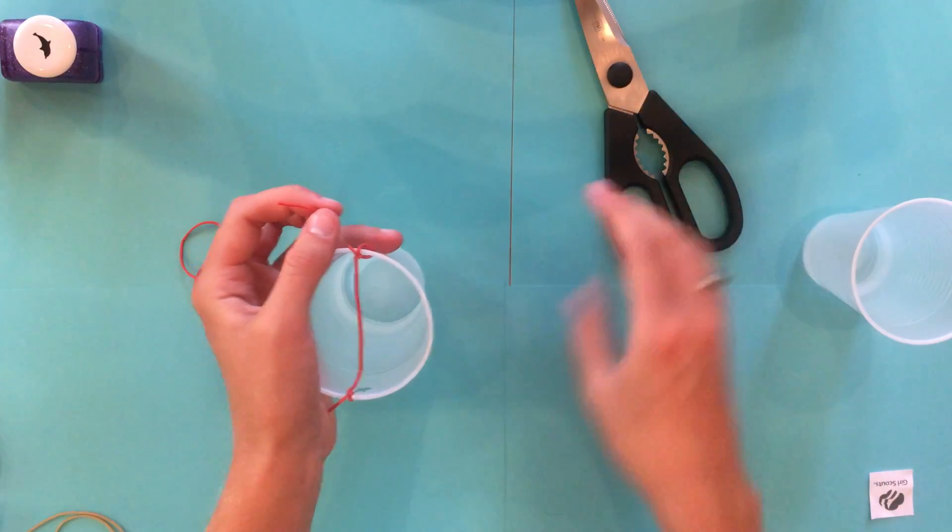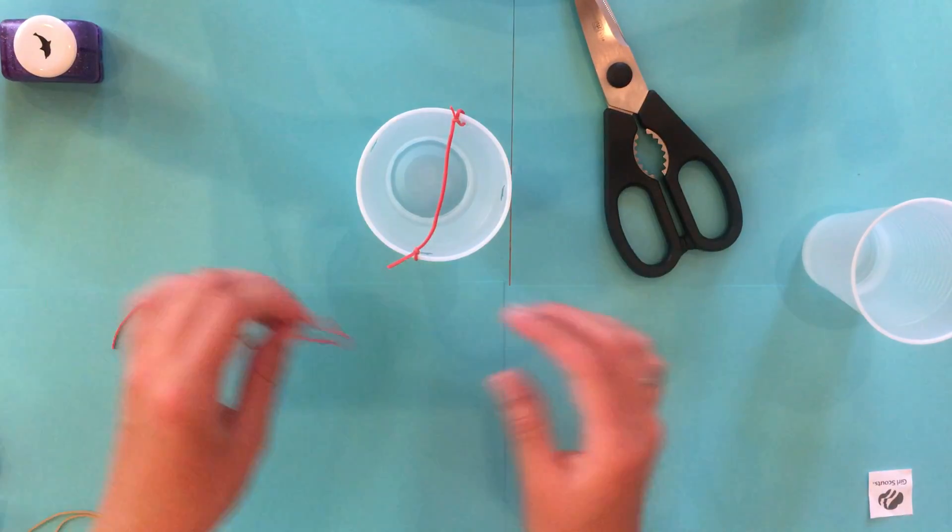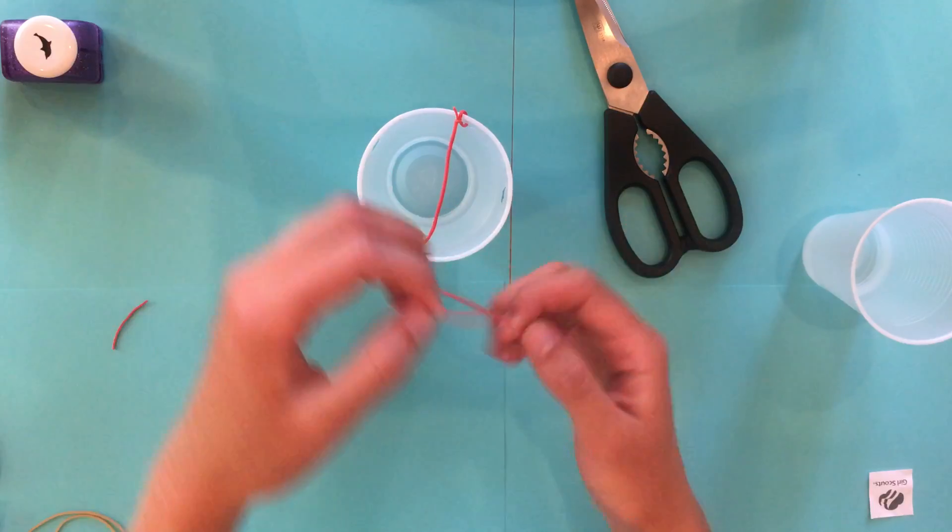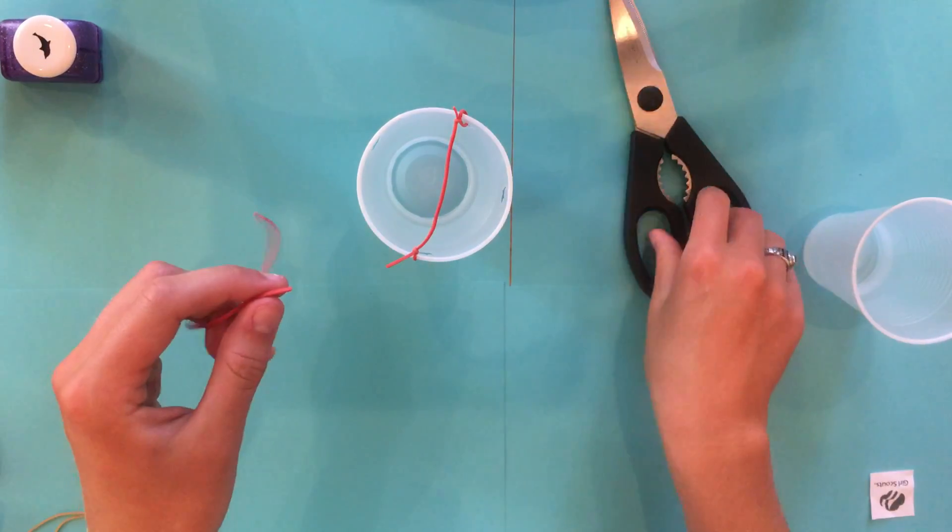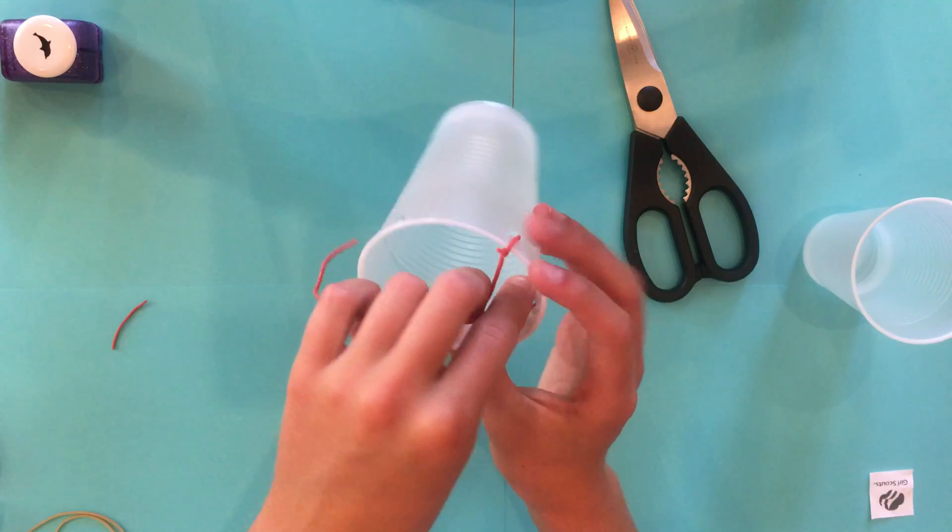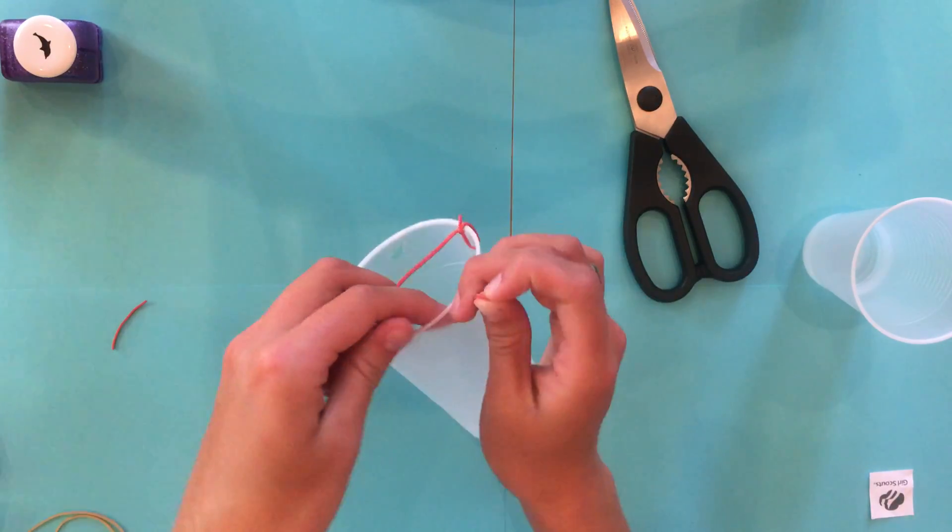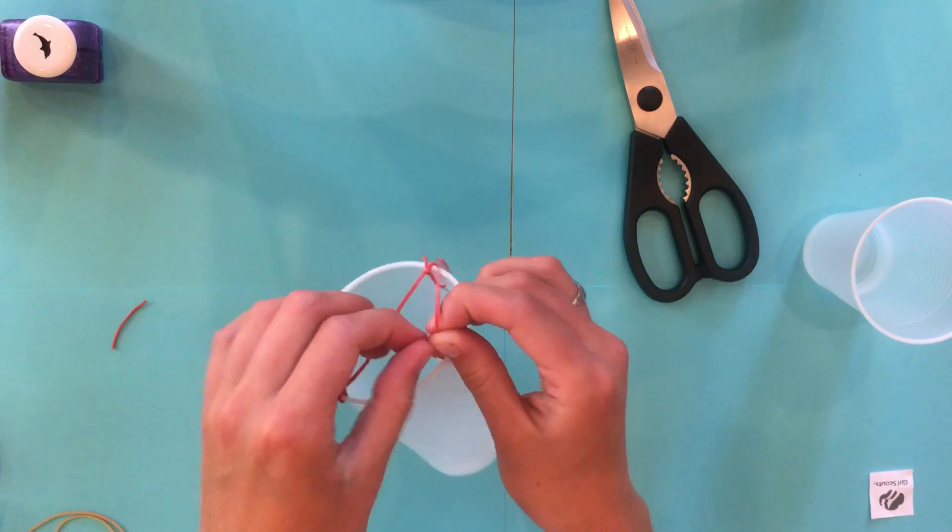Some of you may have already figured this out. The next thing you're going to do is the exact same thing to the other side. Cut your other rubber band, string it through, double knot it, and do the same thing to the other side.